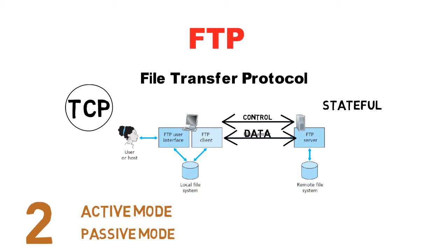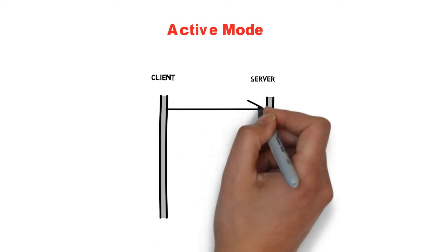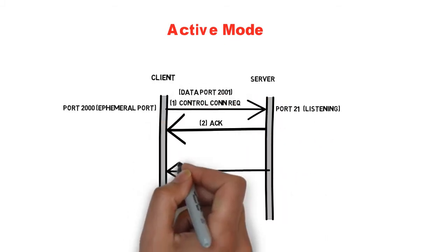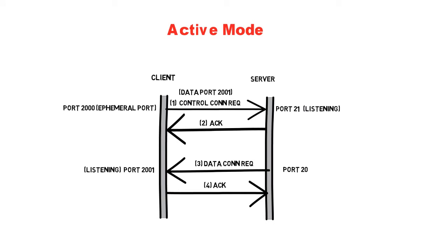Let us discuss active mode first. In active mode, the client will be listening on a port for a data connection. First, the client initiates a control connection. The server will be listening for a control connection on port number 21. Along with this connection request, the client will send the port number on which it is listening for a data connection.